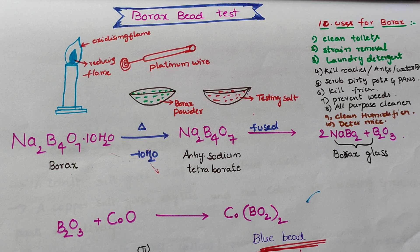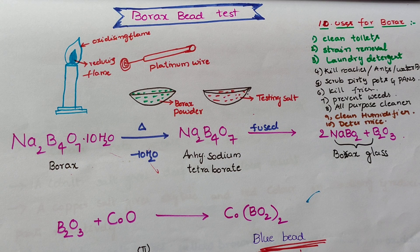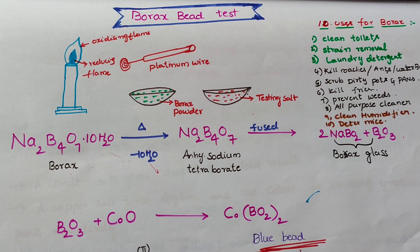The Borax bead test is a test for the presence of certain metals by observing the colors given to a bead of Borax in a loop of platinum wire, held in the oxidizing and reducing parts of a Bunsen burner flame.